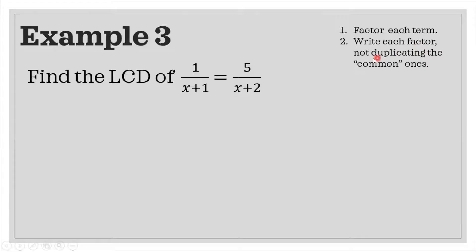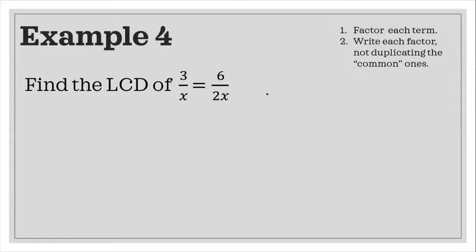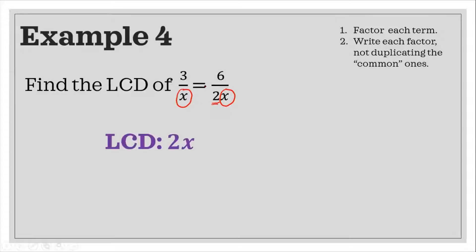The second step is: write each factor, not duplicating the common ones. In this case there are no common terms, so the LCD is just the quantity x plus 1 times the quantity x plus 2. Now in another example with denominators 2 and x, x is a common factor of both terms, so we will not duplicate x. Our LCD is 2 times x, or simply 2x.